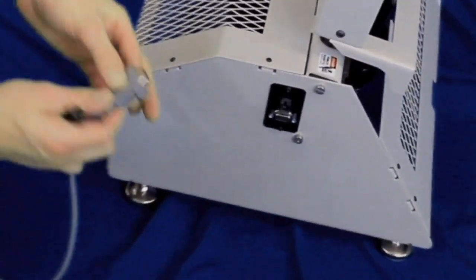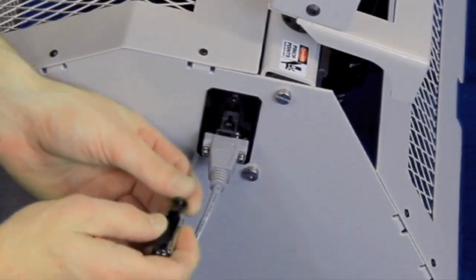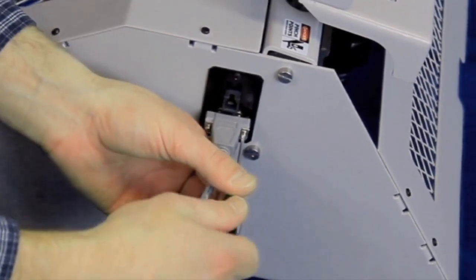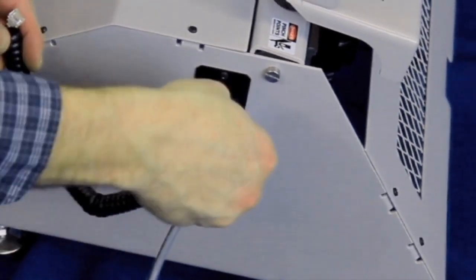Install the feeder's serial communication cable. Tighten both screws with a number one flat head screwdriver. Install the elevator interface phone cord cable.